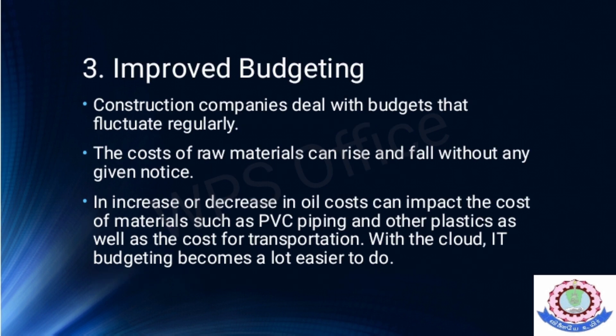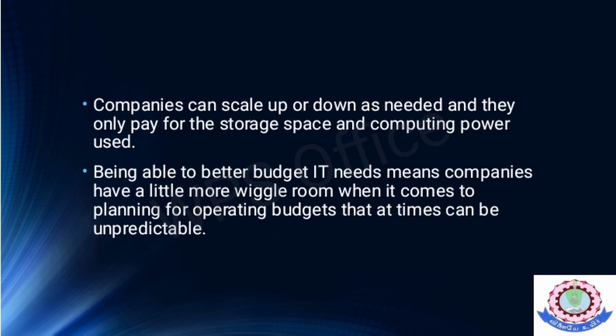The third way is improved budgeting. Construction companies deal with budgets that fluctuate regularly — the cost of raw materials can rise and fall without notice. An increase or decrease in oil costs can impact the cost of materials such as PVC piping and other plastics as well as transportation costs. With the cloud, IT budgeting becomes a lot easier. Companies can scale up or down as needed and only pay for the storage space and computing power used, providing more flexibility when planning for unpredictable operating budgets.